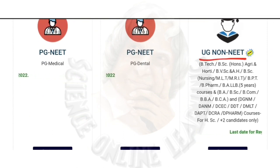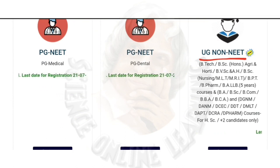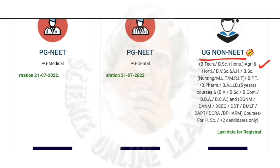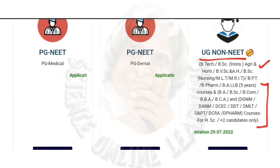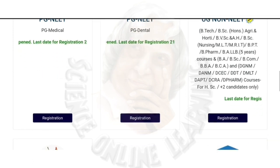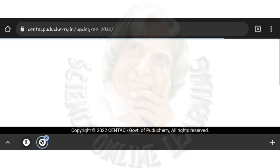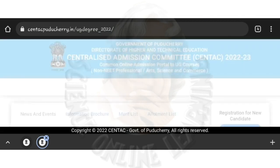UG non-need courses include: BTEK, BSE Agriculture, RTE, BVSE and Animal Hospitality, BSE Nursing, MLT, MRI, BPT, BFORMER, BALLB, BABSEBCOM, BBABCA. So we have an online application open for these courses.